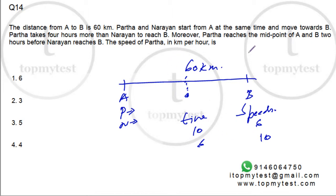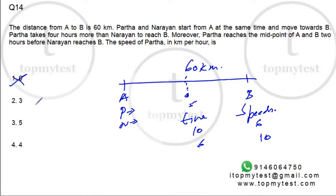We also need to satisfy the second condition: Partha reaches the midpoint two hours before Narayan reaches B. If Partha's speed is 6, he reaches the midpoint after 5 hours, which is only one hour before Narayan reaches B — not two hours. So speed 6 cannot be the answer.